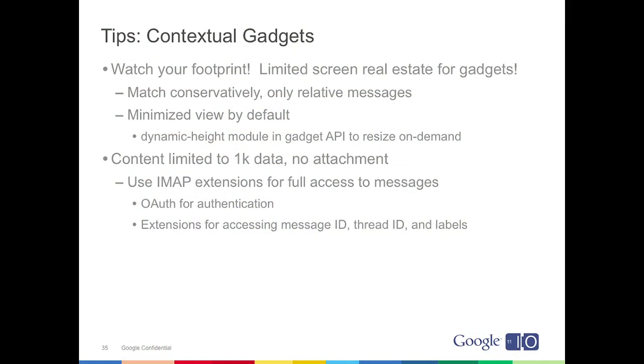Another limitation to be aware of is that gadgets only have access to about 1KB of data from the email itself. There are workarounds — you can use IMAP extensions to fetch the content of the email and attachments in the background. To make this easier, we have OAuth authentication for IMAP, so you don't need the user's username and password. You can also use protocol extensions to access emails based on Gmail message and thread IDs, as well as manipulate labels.